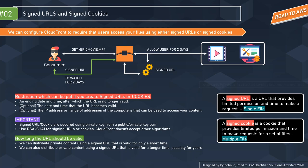The restrictions you can put on signed URLs or cookies are: first, an ending date or time after which the URL is no longer valid; second (optional), the date and time that the URL becomes valid — like a movie premiere, valid from July 10th at 10 PM; third (optional), the IP address or range of addresses of computers that can be used to access your content. Signed URLs and cookies are secured using a private key from a public-private key pair, using RSA SHA-1 for signing. CloudFront doesn't accept any other algorithms.